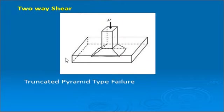Two-way shear, also called punching shear, represents a specific failure pattern. The critical section for two-way shear is considered at a distance d/2 — where d is the effective depth of the footing — from the face of the column. Along the periphery of the column it is necessary to consider this critical section for two-way shear.